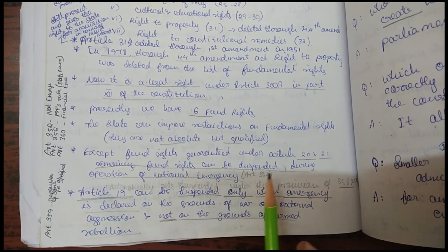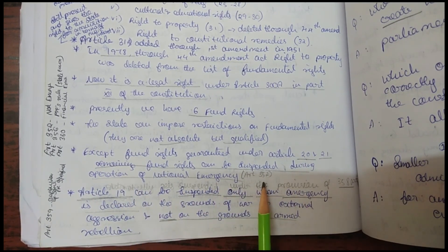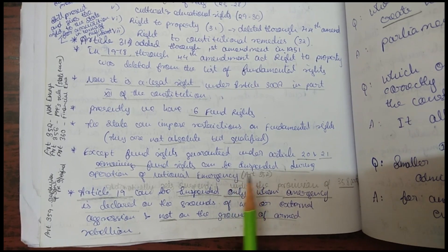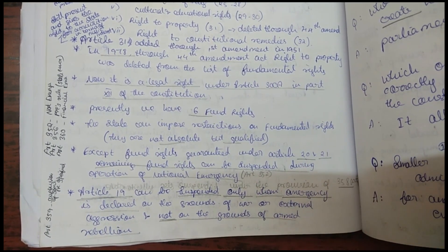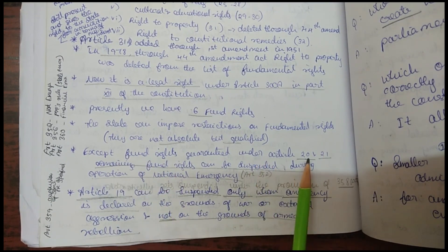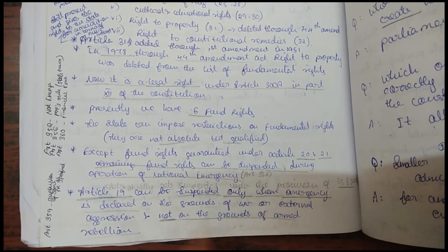Except for fundamental rights under Articles 20 and 21, the remaining fundamental rights can be suspended during the operation of a national emergency, which is covered under Article 352. Article 19 is automatically suspended during times of external war or external aggression, but not during internal armed rebellion. This is specifically mentioned in Article 358.